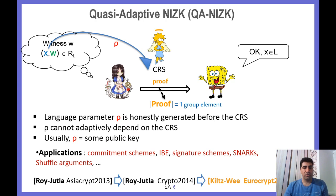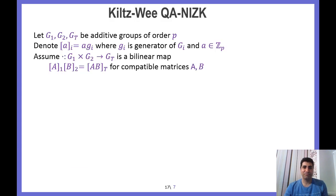The notion of QA-NIZK was first introduced by Roy and Vutla in 2013, and then extended by Kiltz-Wee in EuroCrypt 2015, where they proposed the most efficient QA-NIZK for linear languages containing only one group element. Before explaining the Kiltz-Wee QA-NIZK, let's have a short overview of the notation. Let G₁, G₂, and Gₜ be groups of order p. We denote [A]ᵢ as A times Gᵢ where Gᵢ is a generator of Gᵢ and A is an integer, and assume e: G₁ × G₂ → Gₜ is a bilinear mapping.